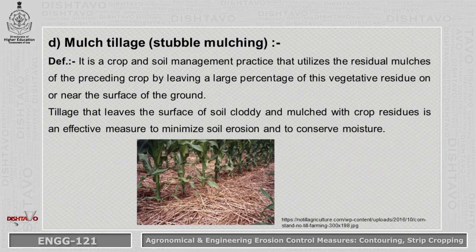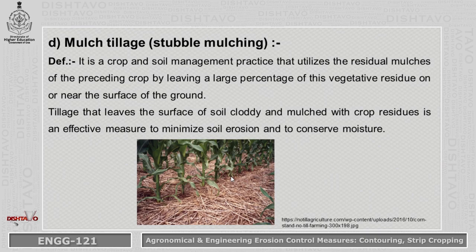The last type is Mulch Tillage, also called stubble mulching. Organic mulches — the residues of previous crops — are placed into the canopy of the crop. This helps retain moisture, avoids evapotranspiration, controls weeds, and ultimately controls soil erosion.